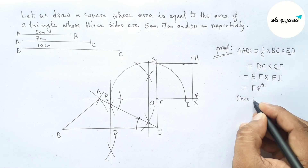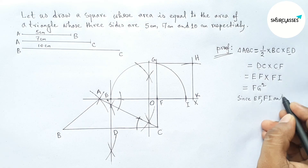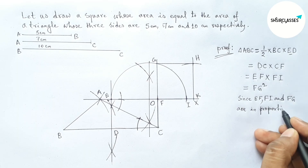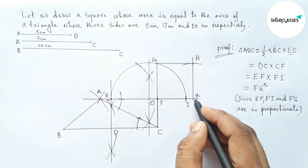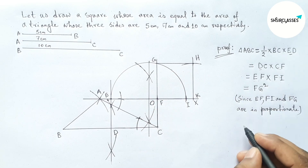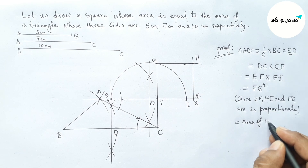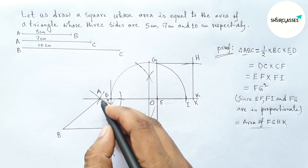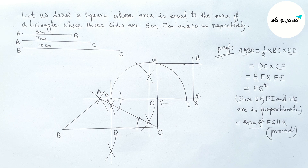So EF and FI are in proportion. By using the proportional formula, EF into FI equals FG squared, since EF, FI, and FG are in proportion. Therefore EF into FI equals FG squared. And FG squared is the square of the side of square FGHK, which is the area of square FGHK. Therefore area of triangle ABC equals area of square FGHK. That's the proof. Thanks for watching.